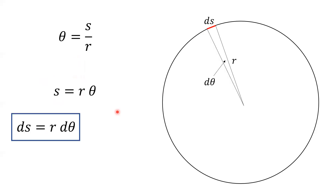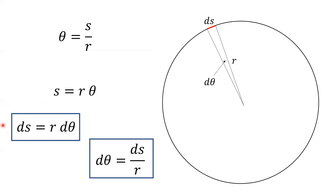We can write the differential version of that equation: if we're talking about an infinitesimal angle d theta, we'd trace out an infinitesimally small arc length ds, giving us ds = r·dθ. Don't forget, there's no mystery here — this just comes from the definition of an angle in radians. Solving for d theta: d theta = ds/r. A tiny little angle d theta can be calculated by taking the arc length it intercepts and dividing by the radius.